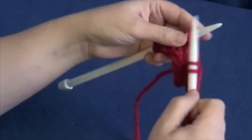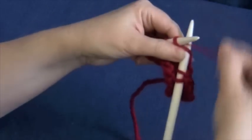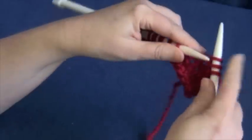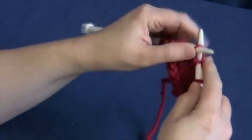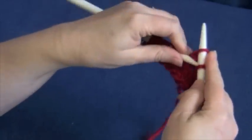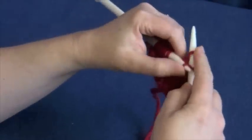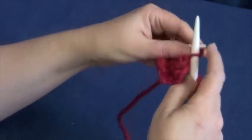Before we do the next stitch, let's go ahead and do our yarn over, knit a stitch, drop the yarn over over the top, and then pass that stitch over as well, one at a time.